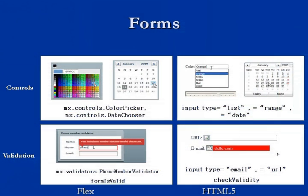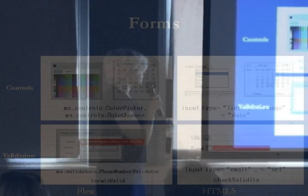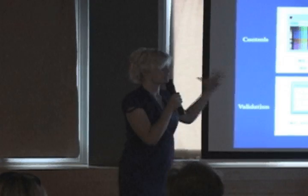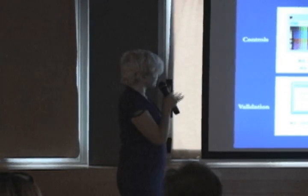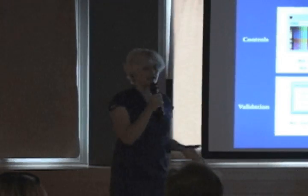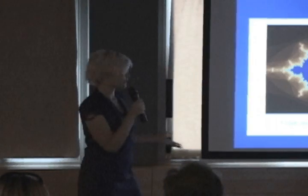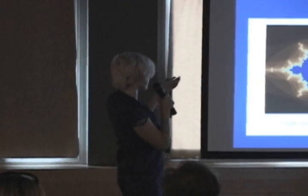For forms, HTML5 adds a bunch of new input types, which is pretty nifty. Flex has a couple of controls, and both of them add new ways of validating data — so you can do things like check whether an email is valid or whether a phone number is valid. And if you've ever tried to write a regex, it's hard.